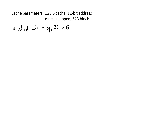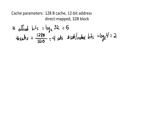From there, we can look at the number of sets in this cache. The total cache capacity is 128 bytes, and each set is going to contain 32 bytes. If we divide these two, we have a total of 4 sets. The number of index bits we need to address one of these sets is log base 2 of 4, which means we need 2 bits for the index or set.